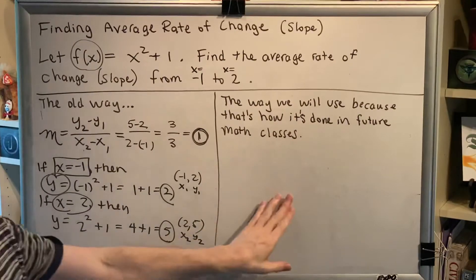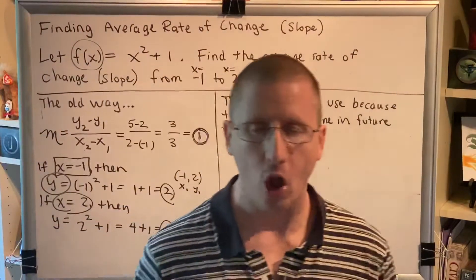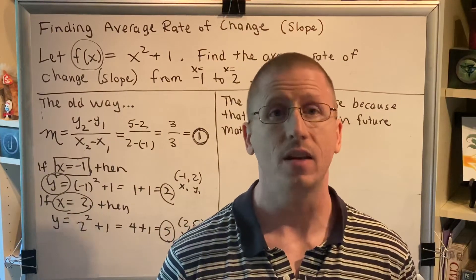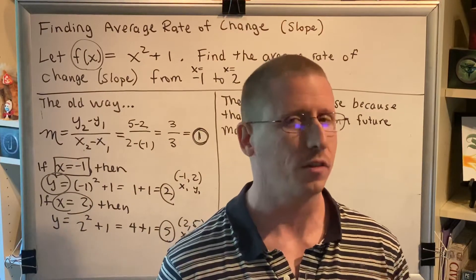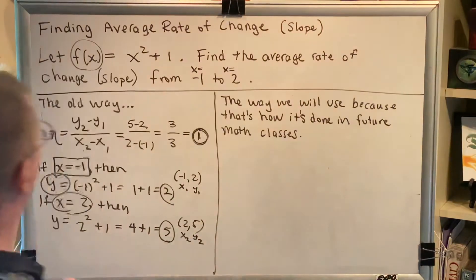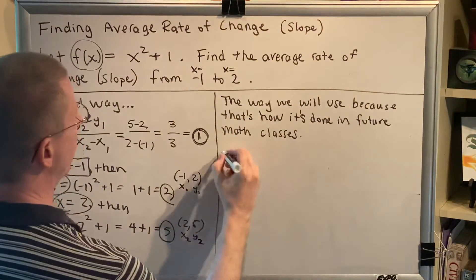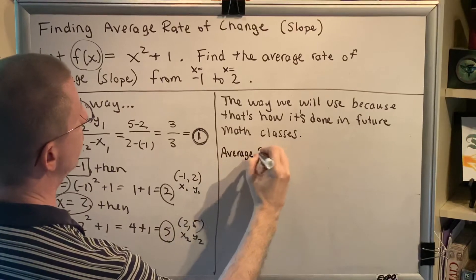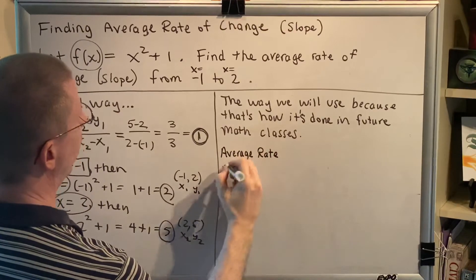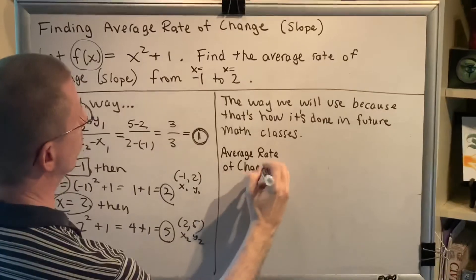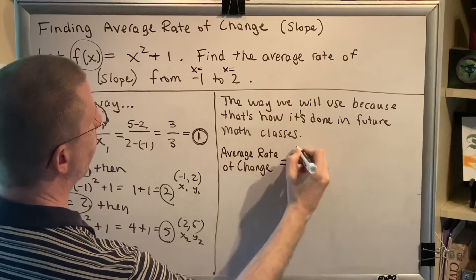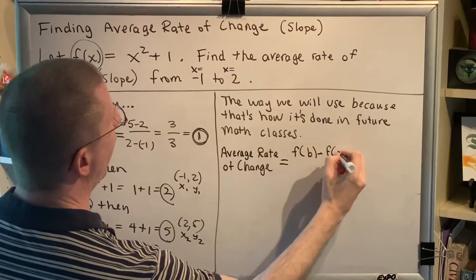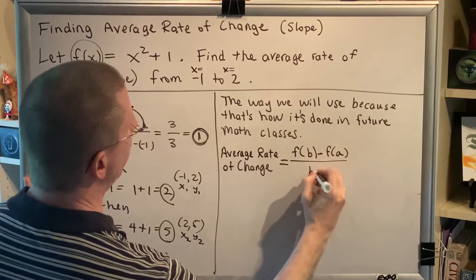Now we're going to do it the way we will actually do it in all of the problems from now going forward in college algebra, including when you see this in calculus, whether that's traditional calculus or business calculus. The rate of change formula says average rate of change equals f of b minus f of a over b minus a.